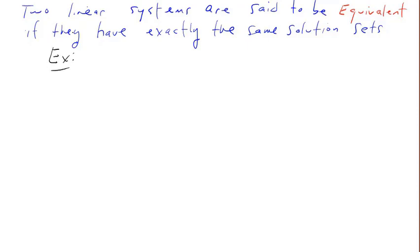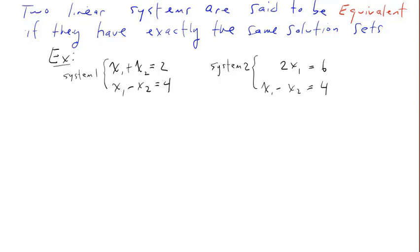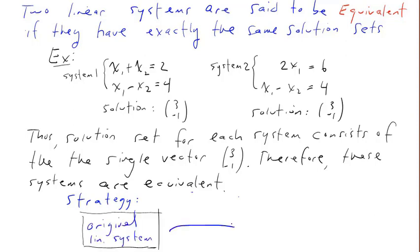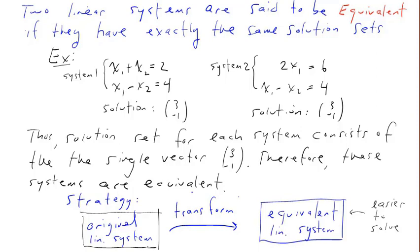For example, here's system 1 and here's system 2. It's easy to verify that the solution of system 1 is a single vector, (3, negative 1). The same vector also solves system 2, so these are equivalent systems. Later, using matrix methods, we're going to develop a strategy for solving linear systems, which involves taking an original system and converting it to an equivalent system which is easier to solve. Solving the equivalent system means that we solve the original system.